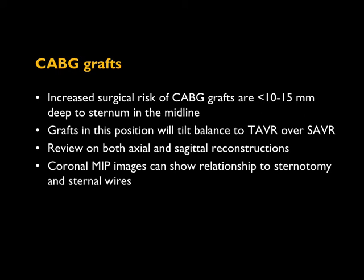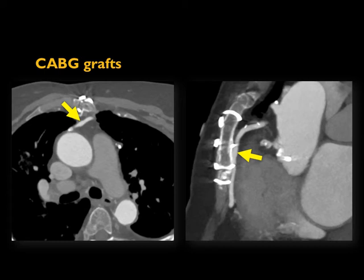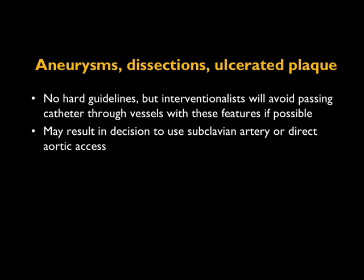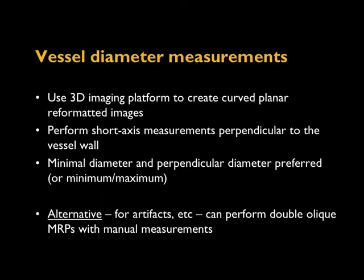Here's an example where an aortic graft is really very close to the sternum, basically stuck up against the back of it — opening that sternum again would certainly put that vessel at risk for injury. We often see aneurysms, dissections, and nasty ulcerated plaque in these elderly patients with atherosclerotic disease. There are no real guidelines on what to do with this, but we mention it and let the cardiologist or surgeon know so they may avoid those areas.